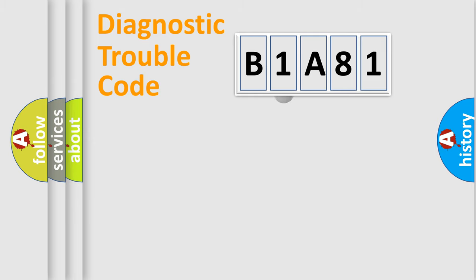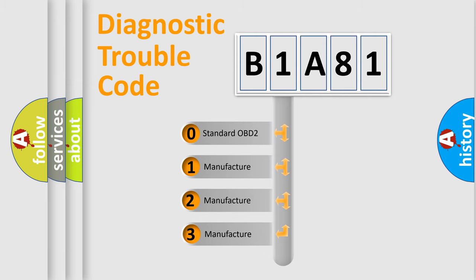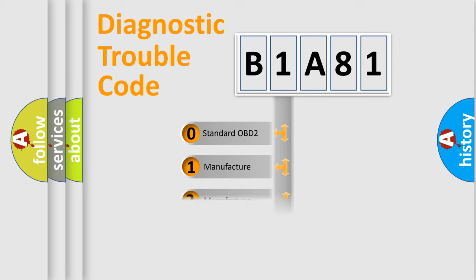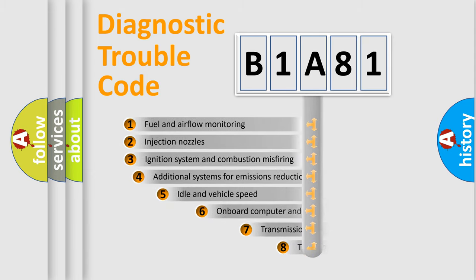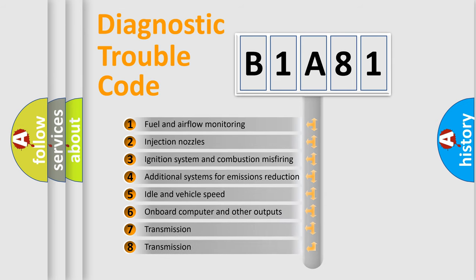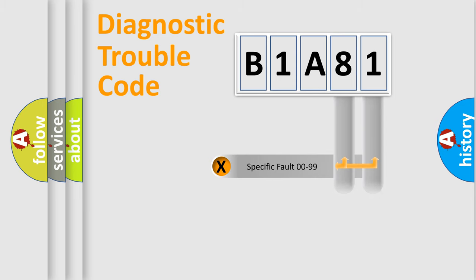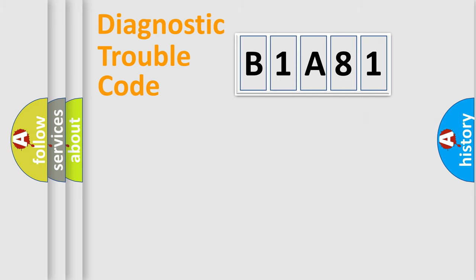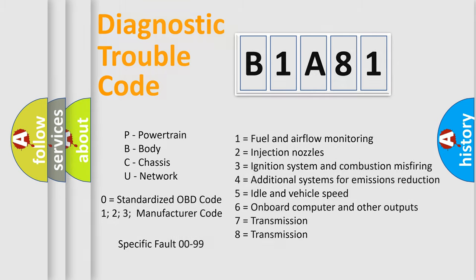This distribution is defined in the first character of the code. If the second character is expressed as zero, it is a standardized error. In the case of numbers 1, 2, or 3, it is a manufacturer-specific error. The third character specifies a subset of errors. The distribution shown is valid only for the standardized DTC code. Only the last two characters define the specific fault of the group.